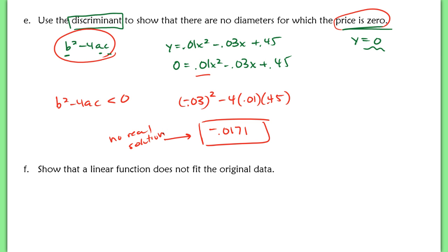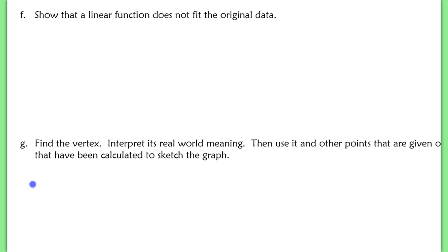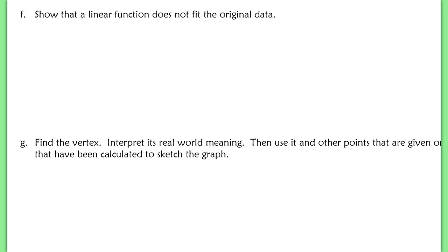So there is no diameter which gives me a price of 0 because I would get the discriminant to be negative. So this is just tying into that idea of the discriminant again. We're connecting that to the real world. Now this next question says, show that a linear function does not fit the original data. Remember, a linear function is a line, y equals mx plus b. In y equals mx plus b, we always have a consistent constant slope. It is the same rate of change.